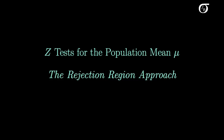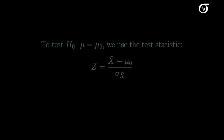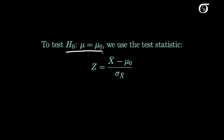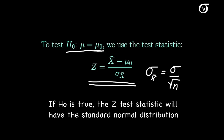Let's look at the rejection region approach in Z tests for the population mean mu. Suppose we are sampling from a normally distributed population and the population standard deviation sigma is known. To test the null hypothesis that the population mean mu equals some hypothesized value mu0, we use a test statistic. Sigma X-bar is the standard deviation of the sampling distribution of X-bar, equal to sigma over the square root of n. If the null hypothesis is true, this test statistic will have the standard normal distribution. The rejection region approach is one way of determining whether an observed value gives us significant evidence against the null hypothesis.